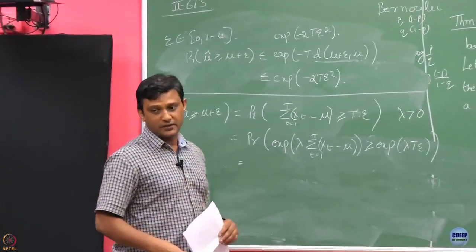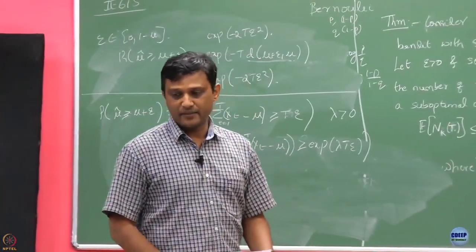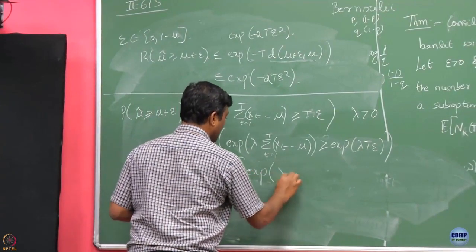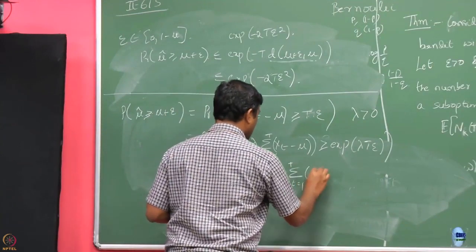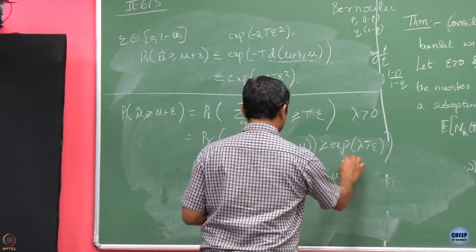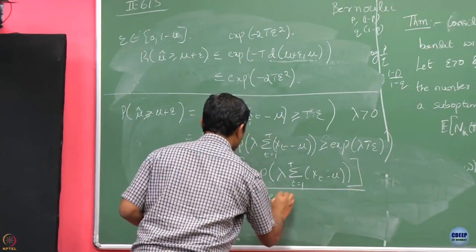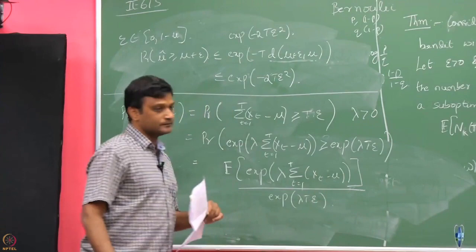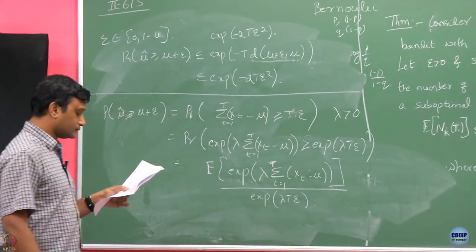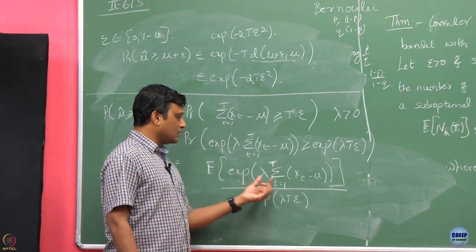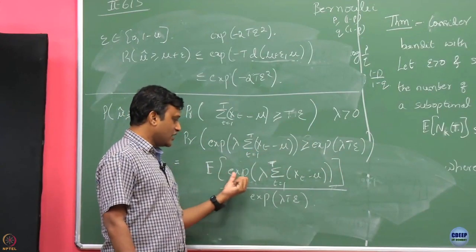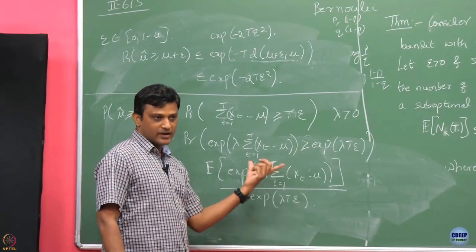Now I am going to use our usual Markov inequality bound. Applying Markov's inequality gives exp of lambda times the sum of x_t, divided by exp of lambda T epsilon. Now this is an exponential of a sum, and since the x_t's are i.i.d., the expectation of this exponential sum can be written as a product of expectations of the individual exponential terms.